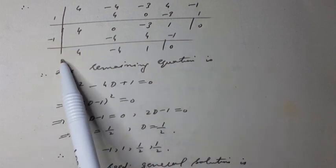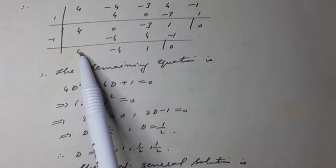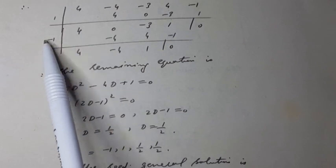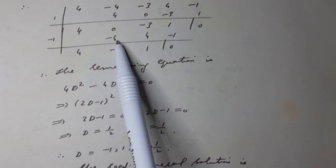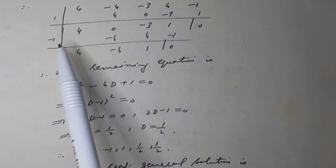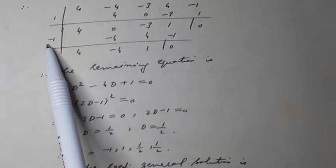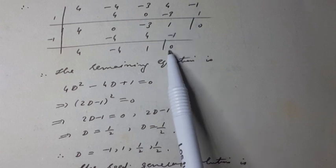Again, we use synthetic division for the other root minus one. Four same as four. Four multiplied by minus one equals minus four. Zero minus four equals minus four. Minus four multiplied by minus one equals plus four. Minus three plus four equals one. One multiplied by minus one equals minus one. One minus one equals zero. Therefore,